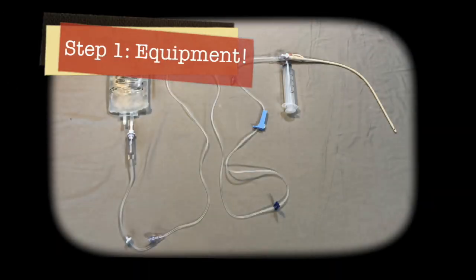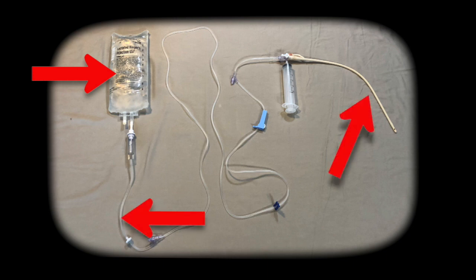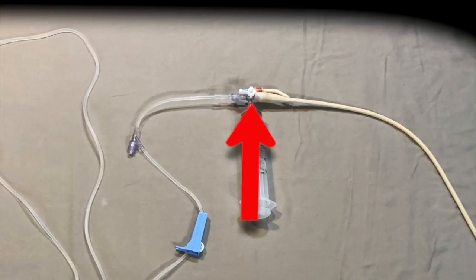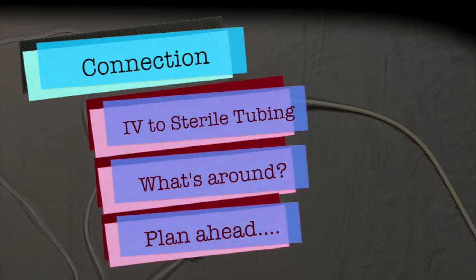Procedure. Your first step is to actually arrange your equipment, because it's going to be different depending on what you have. At the most simple, you're going to need an IV bag, some IV tubing, and some type of sterile medical tubing that you're going to put inside the patient and a way to connect them securely. This connection is really important, and what you'll be able to make will depend on the equipment you have available.